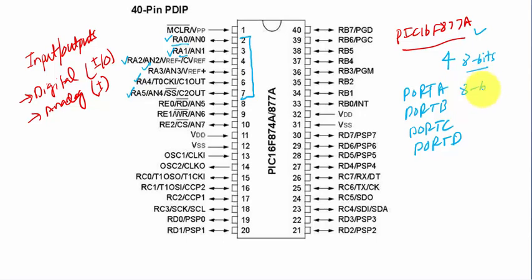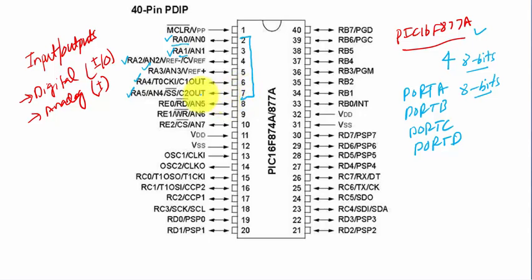Since the PIC 16F877A is an 8-bit microcontroller, every register and every port should be 8 bits wide. If some pins are not used, they remain unused. For example, Port A only uses pins RA0 to RA5 — that's 6 pins — and the remaining 2 bits are unused. Also, RA0 has dual functionality: it can serve as AN0, meaning it can also accept analog input.